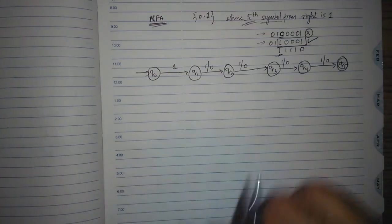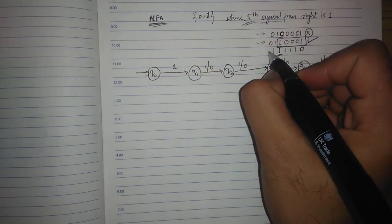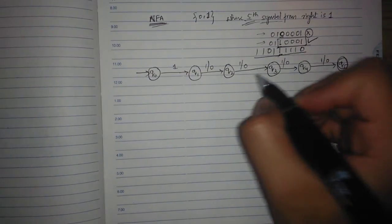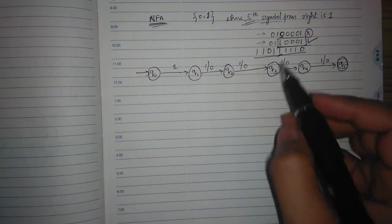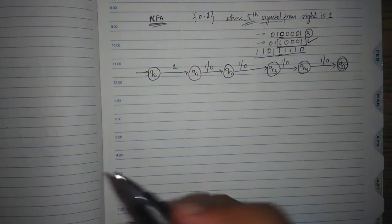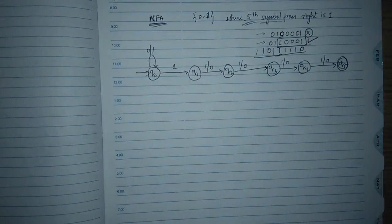Now all this is fine, but I can accept a string like this. That means before this fifth one, I should be able to accept zeros and ones. So let's accept zeros and ones here.